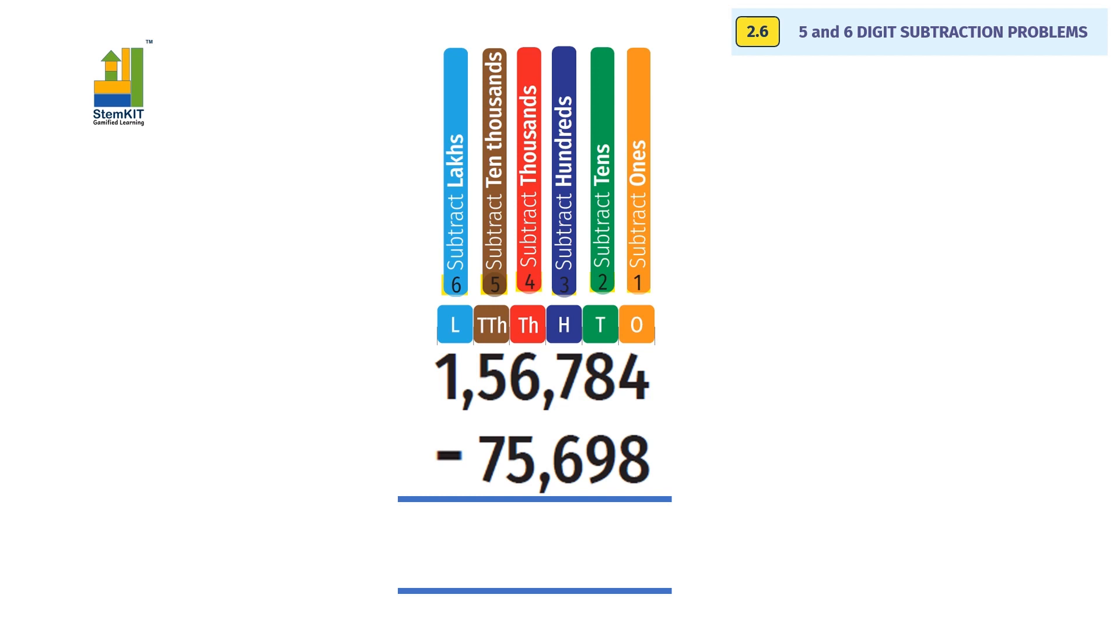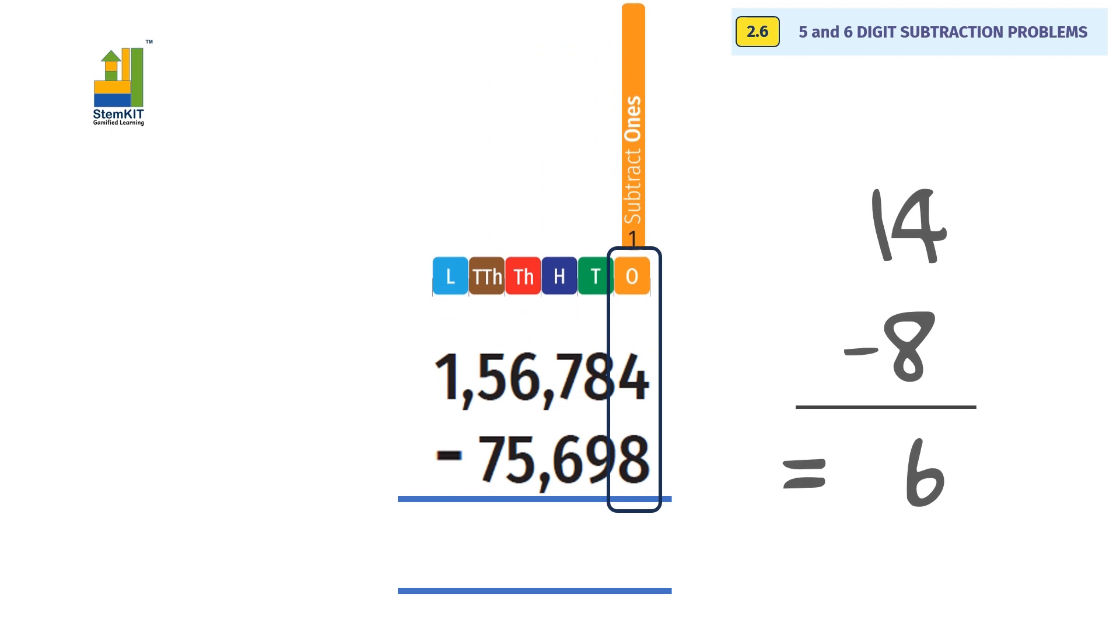Let us start from the right, subtracting ones. 4 minus 8 is not possible, so we borrow 1 ten from 8. 4 becomes 14, 8 tens becomes 7 tens. Now 14 minus 8 equals 6.